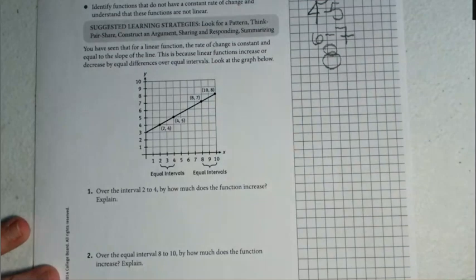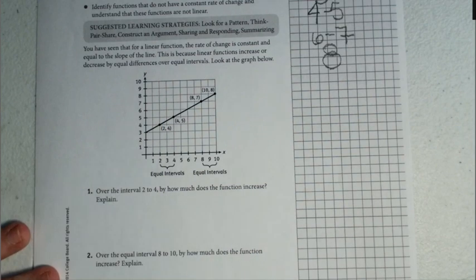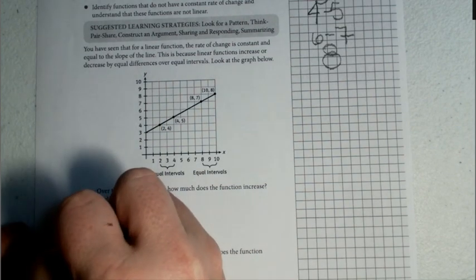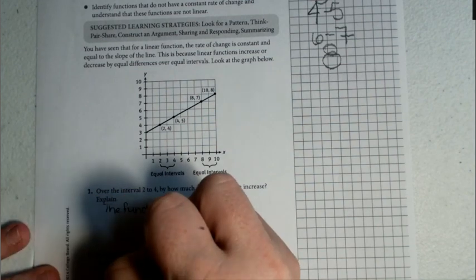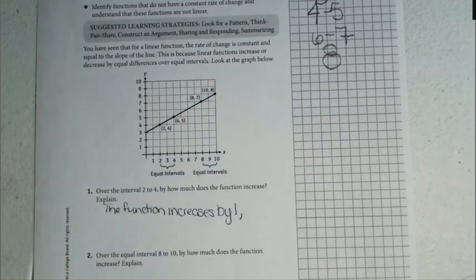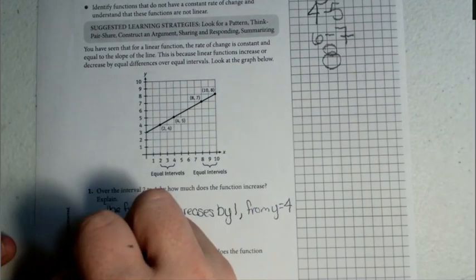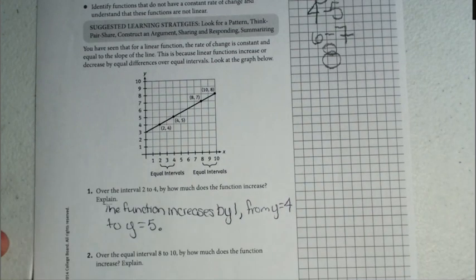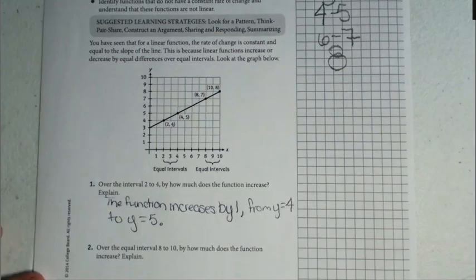Well, if we look at it, here's two and here's four. Our function increases by one. So the function increases by one from y equals four to y equals five. Remember, our y value went from four to five, so that's an increase of one.